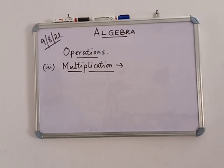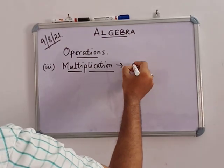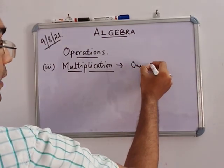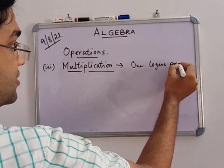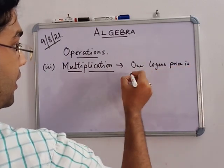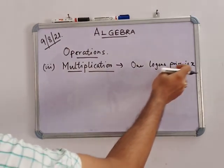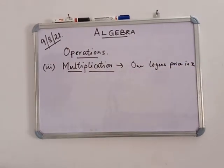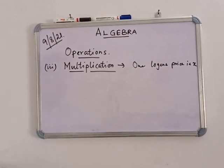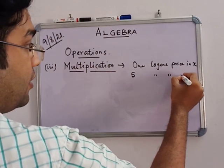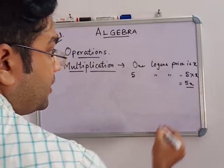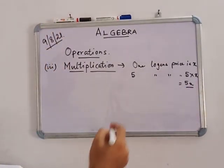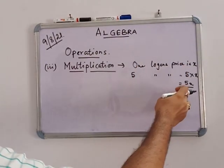Next is multiplication. Suppose the price of one item is X rupees. You have to buy 5 of them. Then the price of 5 items is 5 into X, that means 5X. So when we write it like this, this is the multiplication format.